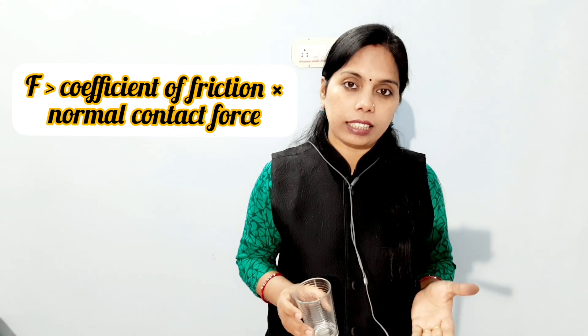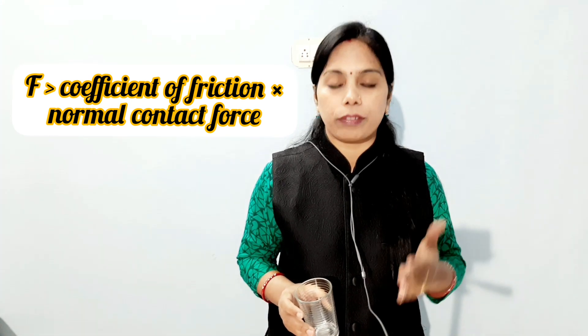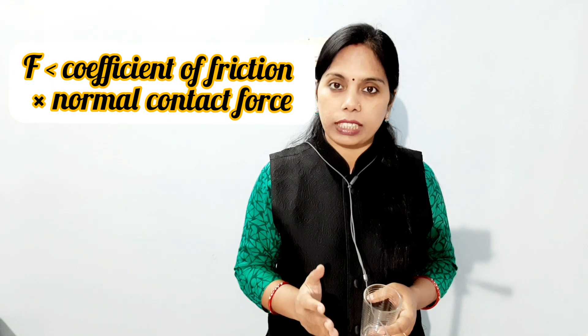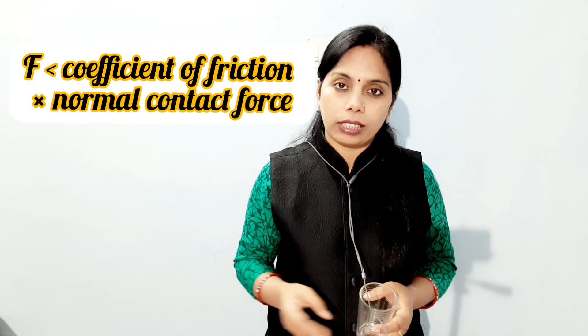If this glass is slipping on the surface, it means the applied force is greater than the multiplication of coefficient of friction and normal contact force. If this glass is not slipping on the surface, it means the force is lesser than multiplication of coefficient of friction and normal contact force.